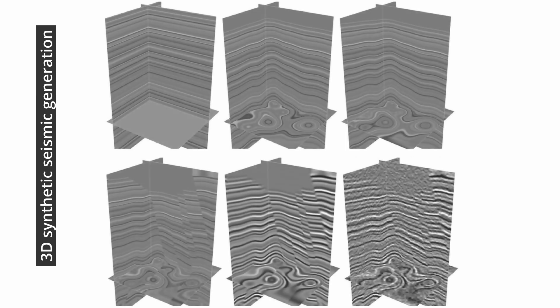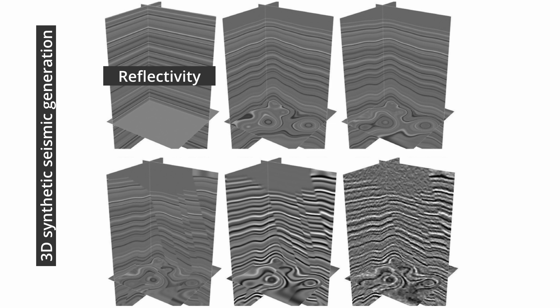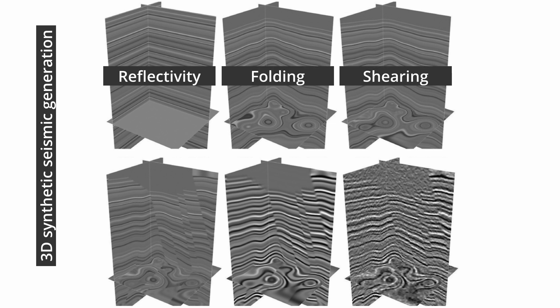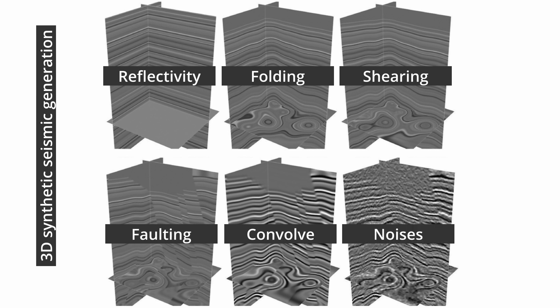The workflow of 3D data set generation looks like the following. First, generate a horizontal reflectivity model, add some folding structures to the model, add some planar shearing to increase the complexity of the folding structure, add planar faulting to obtain a folded and faulted reflectivity model, convolve the reflectivity model with a Ricker wavelet to obtain a synthetic seismic image, and finally add some random noise to obtain a final image.